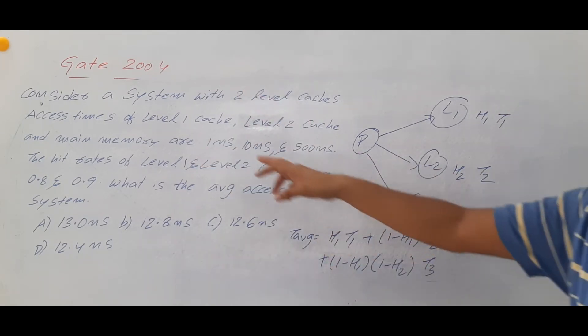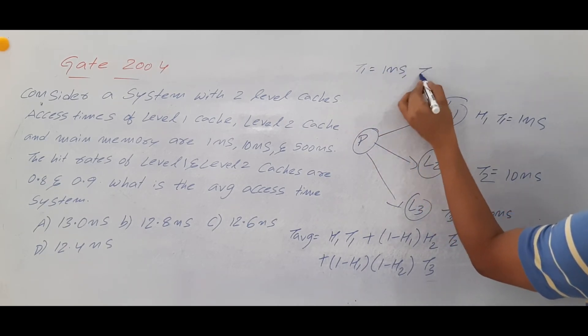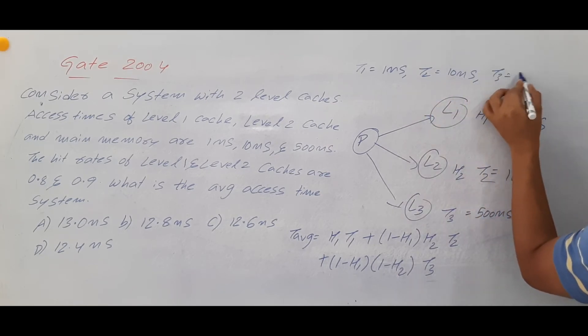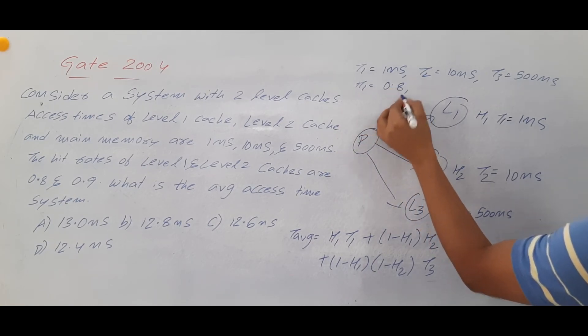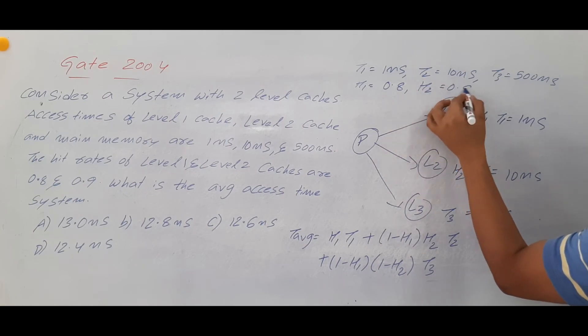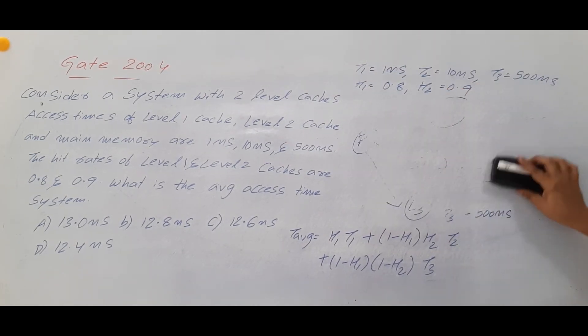What they have given? They have given that L1 and L2 cache and main memory they have given that 1 nanoseconds 10 nanoseconds and 500 nanoseconds. So they have given T1 is equal to 1 nanosecond T2 is equal to 10 nanoseconds and T3 is equal to 500 nanoseconds. And then hit ratio of L1 meaning is that H1 they have given it as 0.8 and H2 they have given as 0.9. Then they are asking us to calculate the average access time. So let me erase this one and substitute these values in this formula.